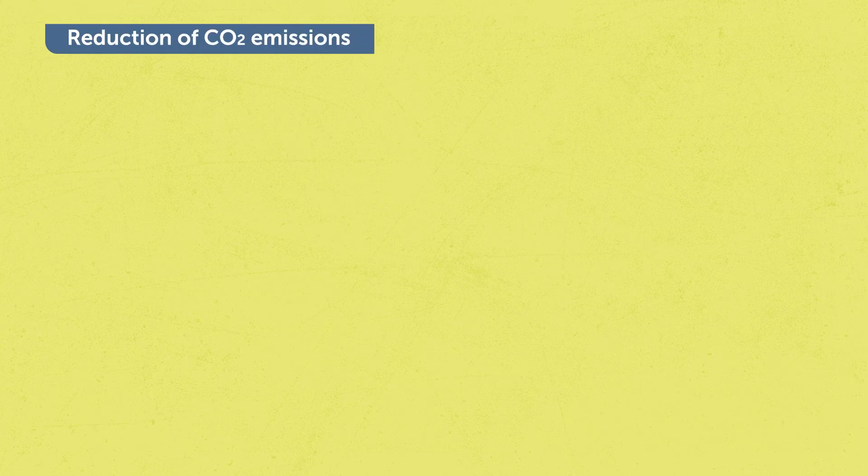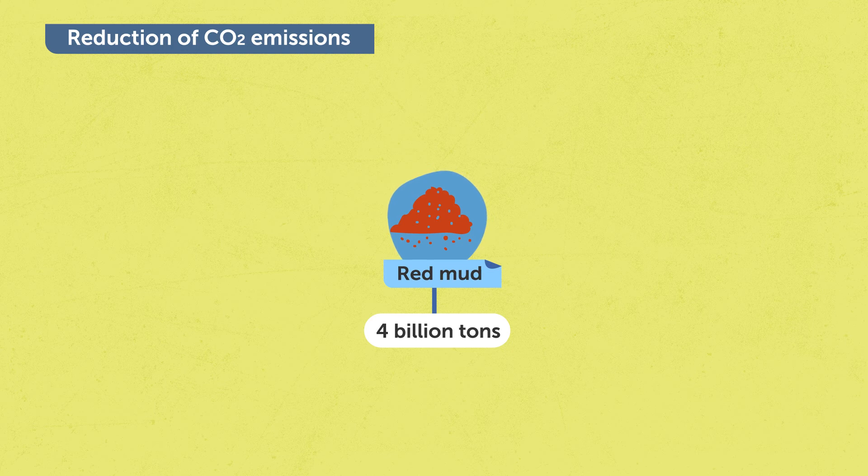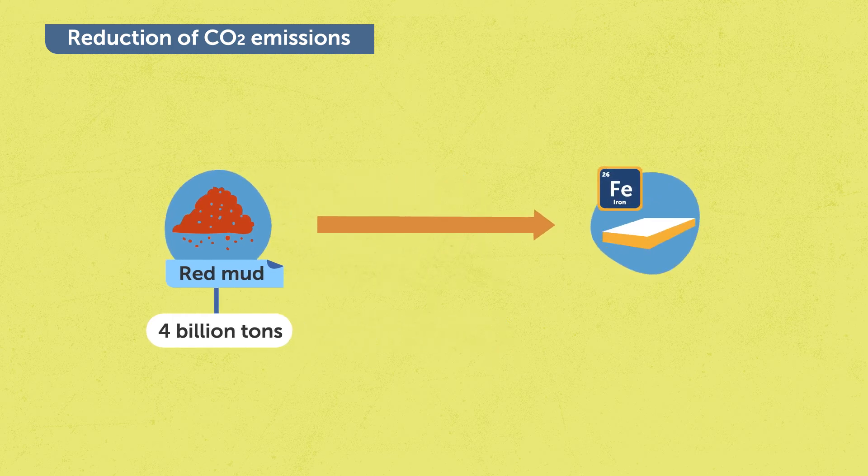The steel industry is responsible for approximately 8% of all CO2 emissions on the planet. If we can start using red mud as a complementary feedstock for iron production, we can use the 4 billion tons of red mud that is already piled up around the globe to produce around 600 million tons of iron.